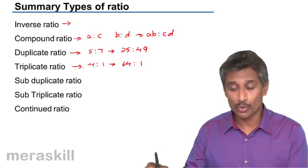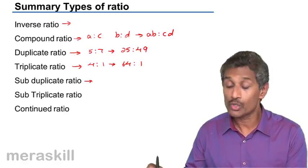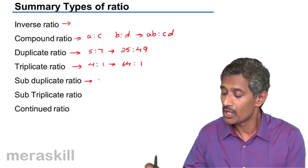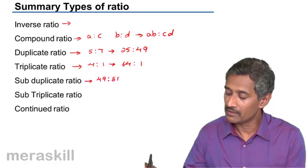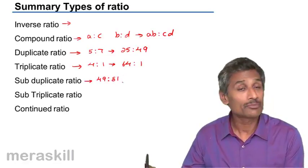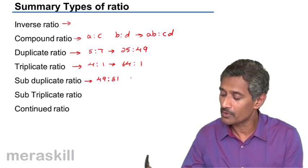Sub duplicate ratio is almost a reciprocal relationship; it's a square root ratio. So suppose you have a ratio 49 is to 81, its sub duplicate ratio is square root of 49, that is 7, is to square root of 81, that is 9.